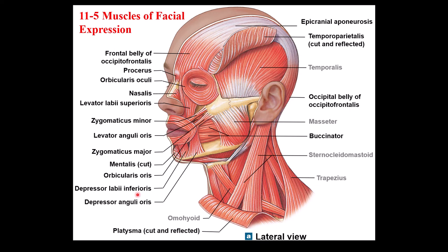Depressor labii inferioris moves the lower lip downward, and depressor anguli oris moves the corner of the mouth downward. The buccinator tenses and compresses the cheek, which is important during swallowing to push food back toward the teeth for proper chewing. The temporoparietalis moves the ear, though most people cannot activate it voluntarily.